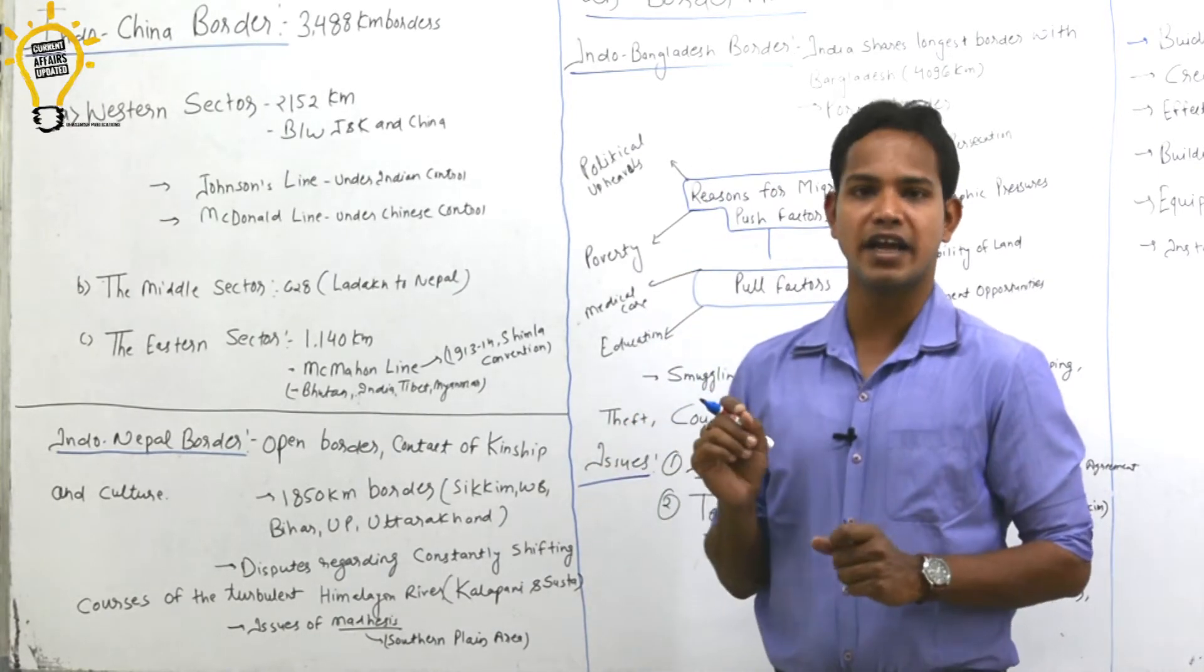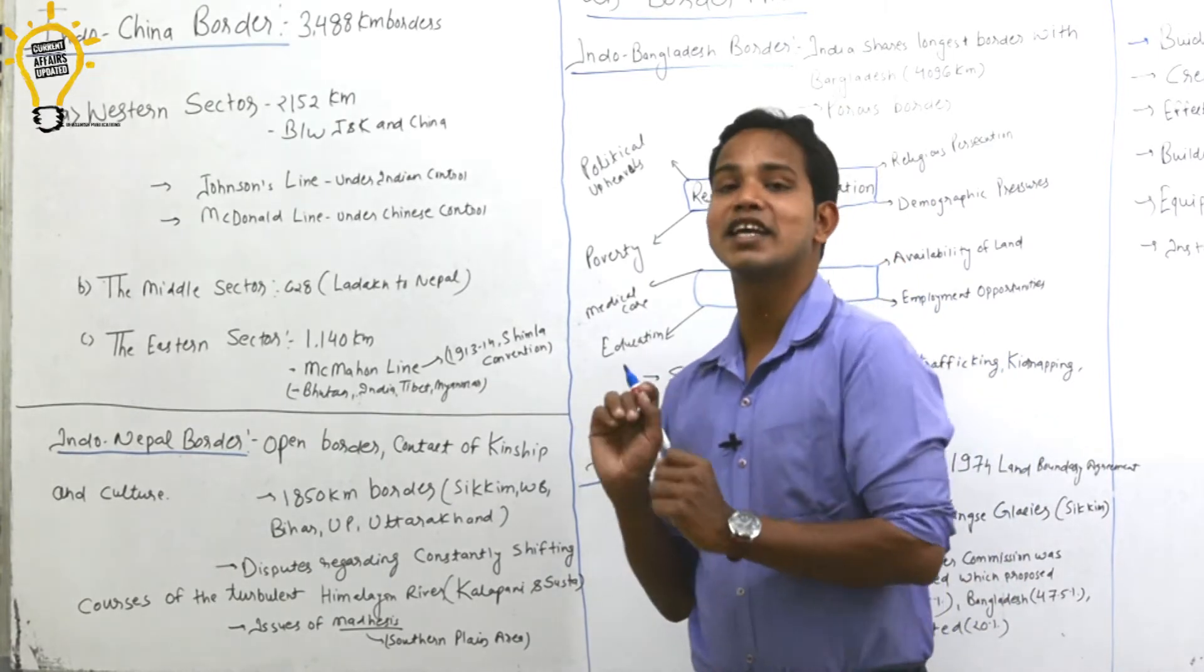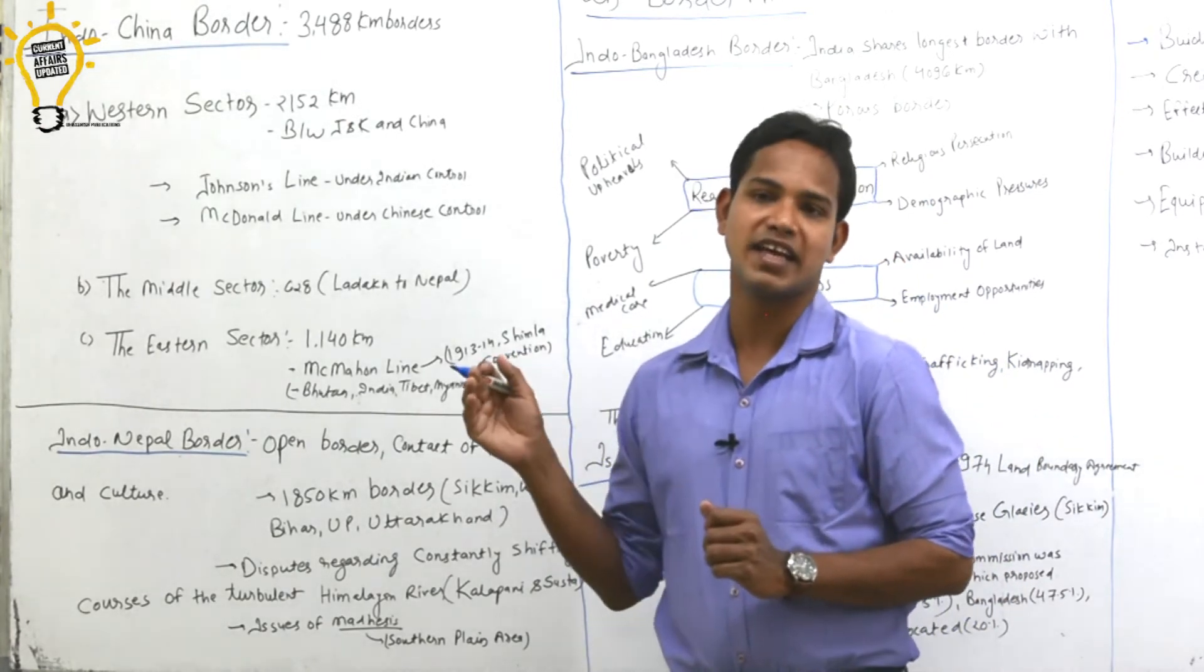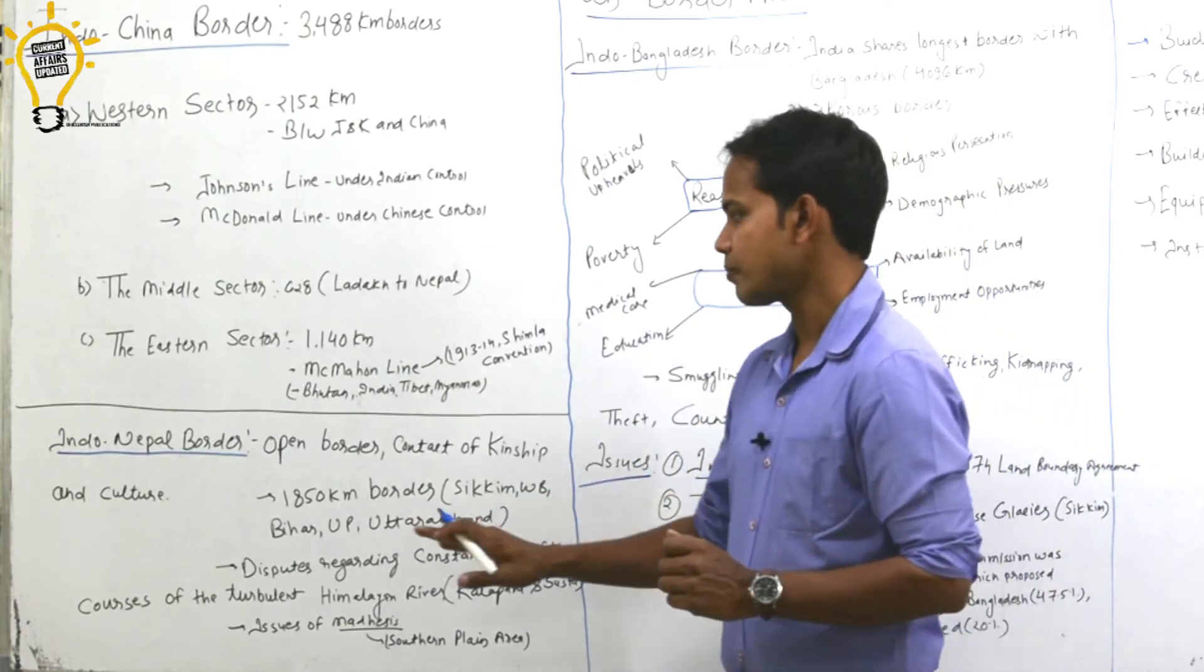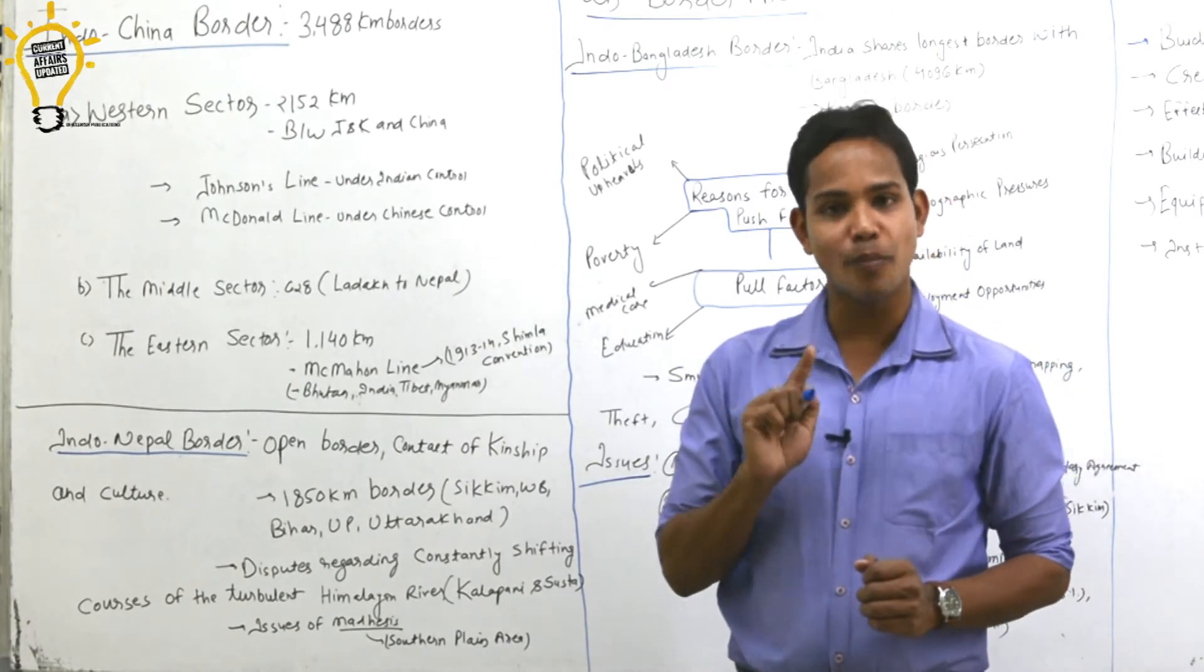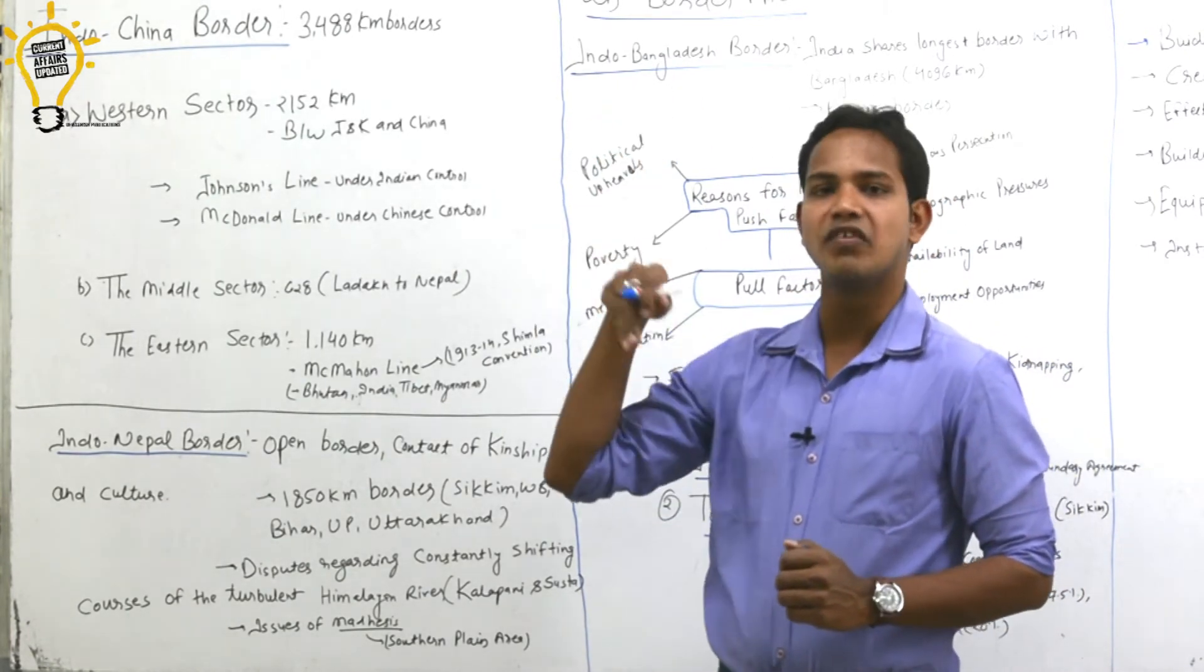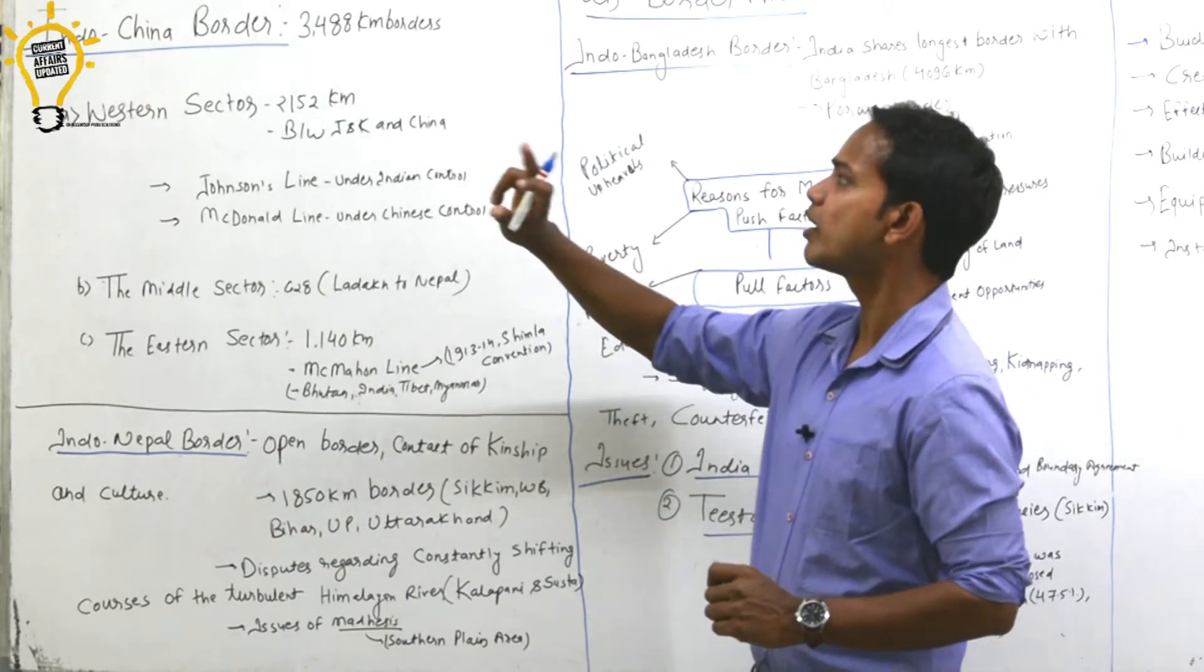India imposed some sanctions. Because of these sanctions, Nepal tilted slightly toward China, even asked for oil reserves directly from China and talked about joining OBOR. This is a big issue with Nepal. Since our border with Nepal is open, we've seen during Sikh riots and other disturbances, a lot of infiltration happened from there.